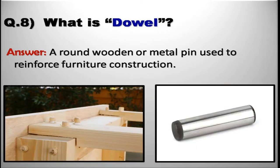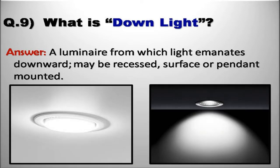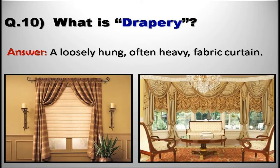What is dowel? A round wooden or metal pin used to reinforce furniture construction. What is downlight? A luminaire from which light emanates downward; may be recessed, surface, or pendant mounted. What is drapery? A loosely hung, heavy fabric curtain.